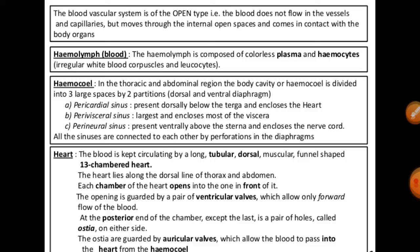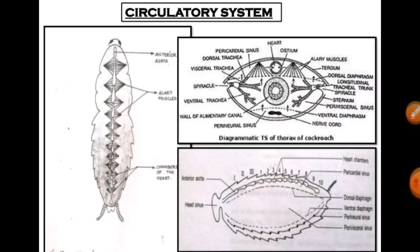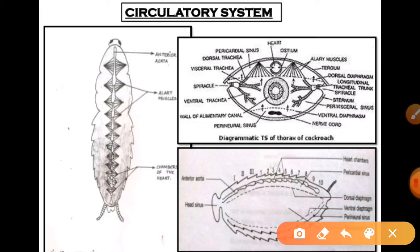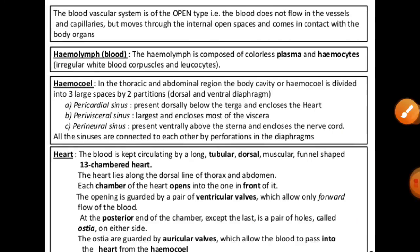The cockroach also has a heart — heart chambers open into the next chamber through the ventricular valves. The heart is a long tubular dorsal muscular funnel-shaped structure with 13 chambers. It lies along the dorsal midline in the thorax and abdomen, and blood is kept circulating by this structure.